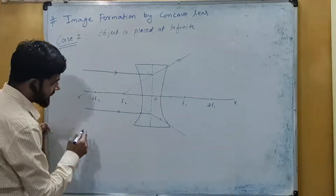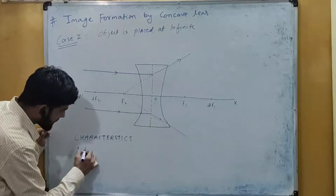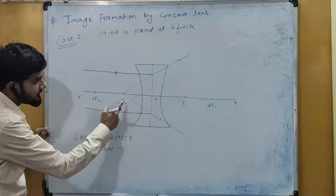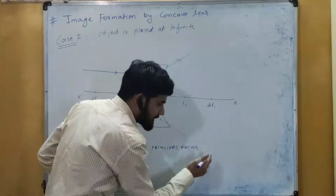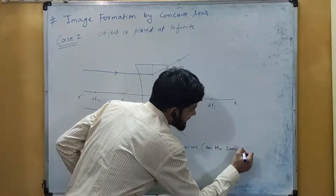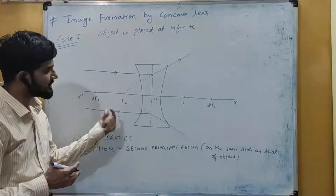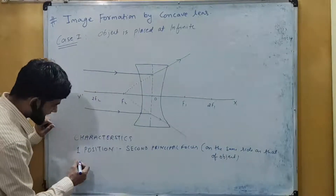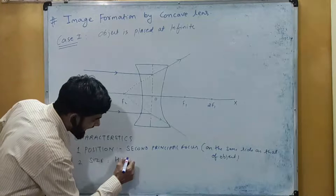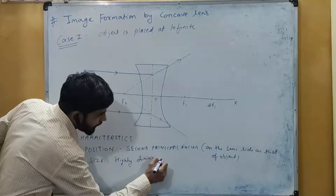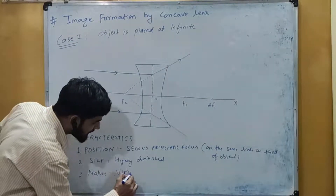Now let us write the characteristics of the image formed. First is the position: the image is formed at the second principal focus, on the same side as that of the object. Second is the size: the image formed is highly diminished — it is a point-sized image. Third is the nature: the nature of the image is virtual and erect.